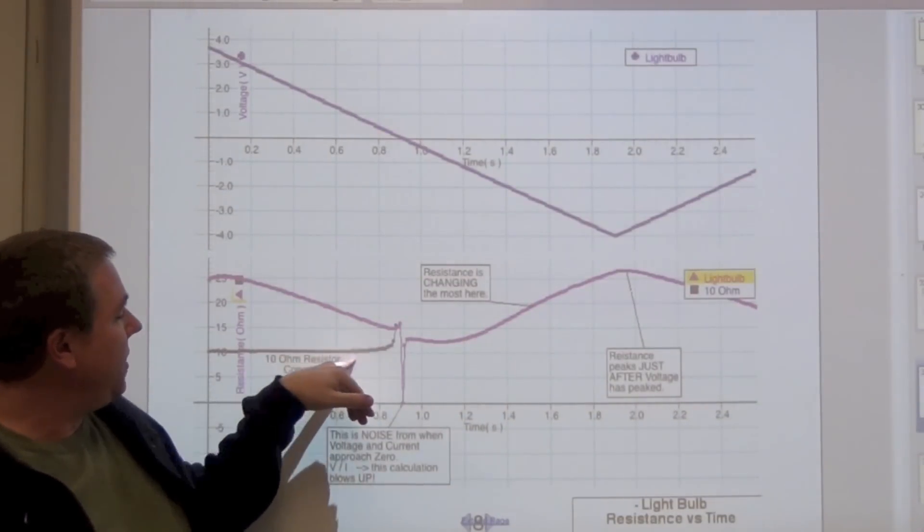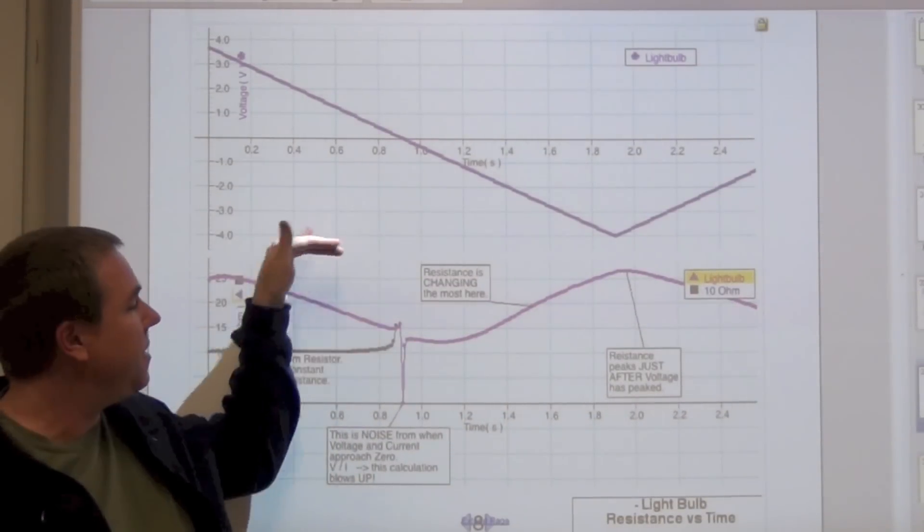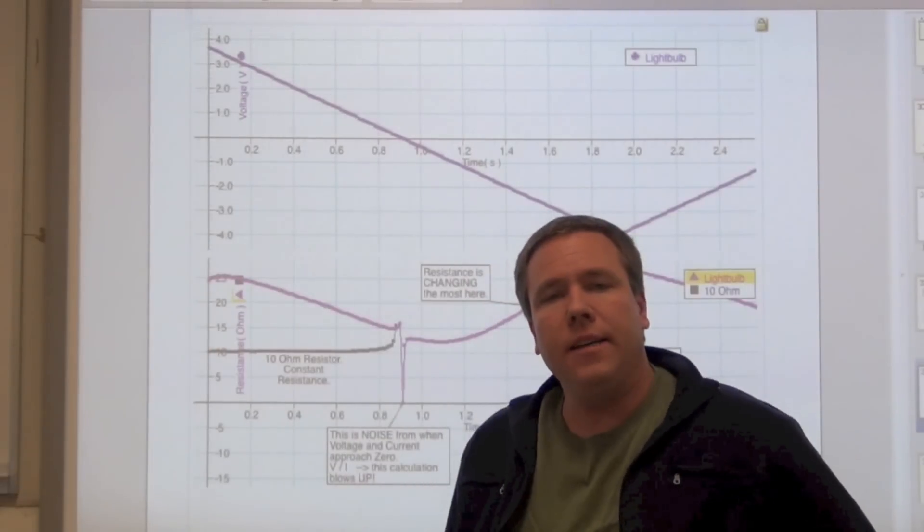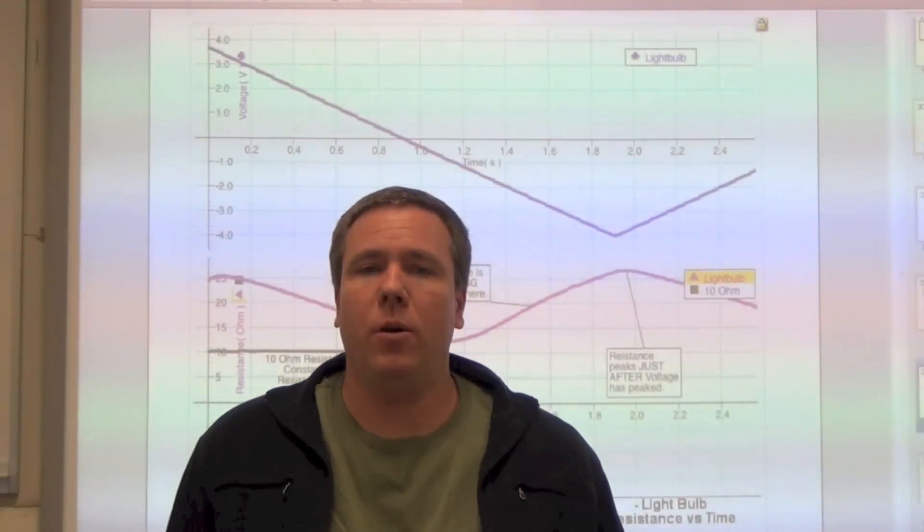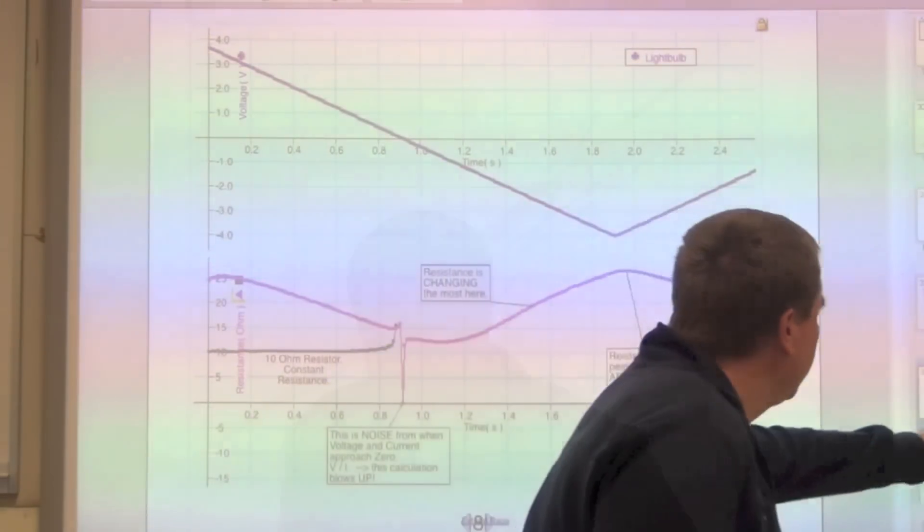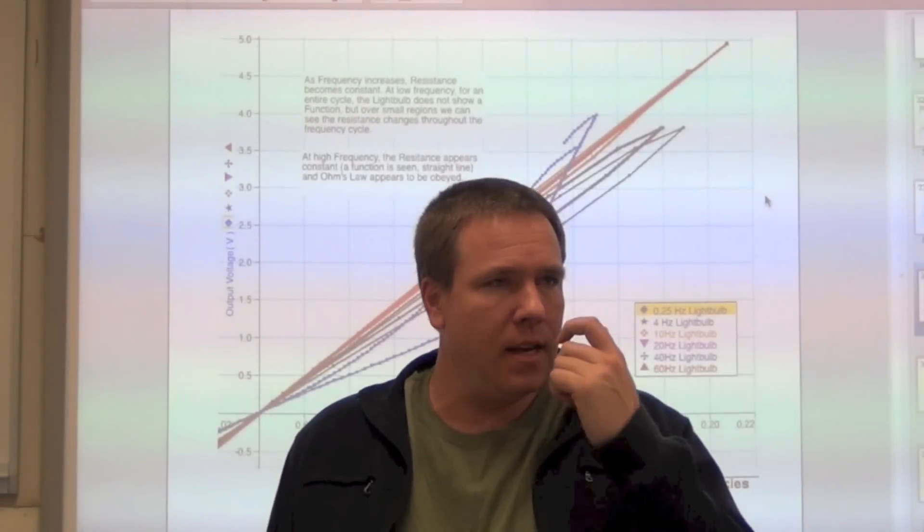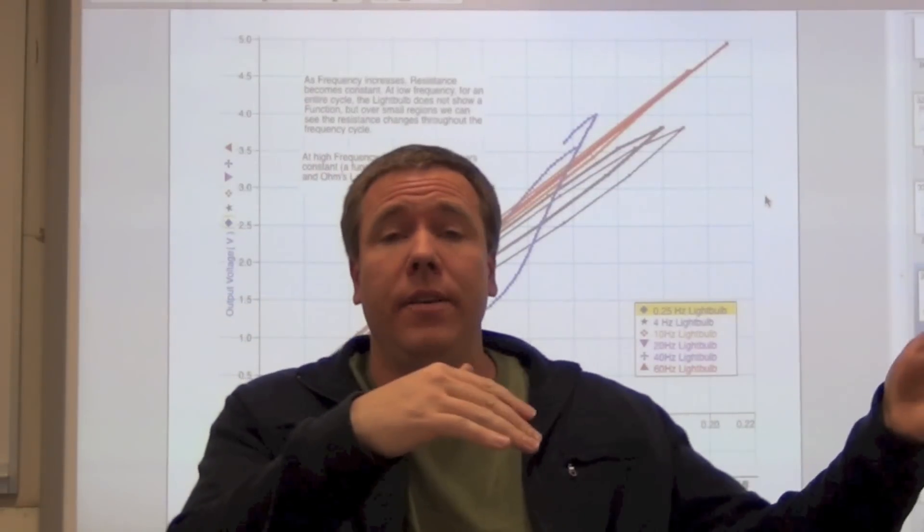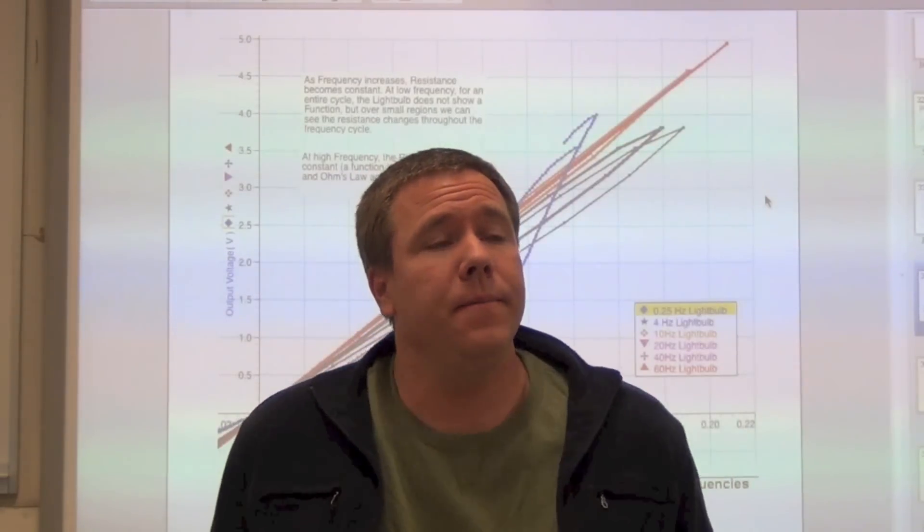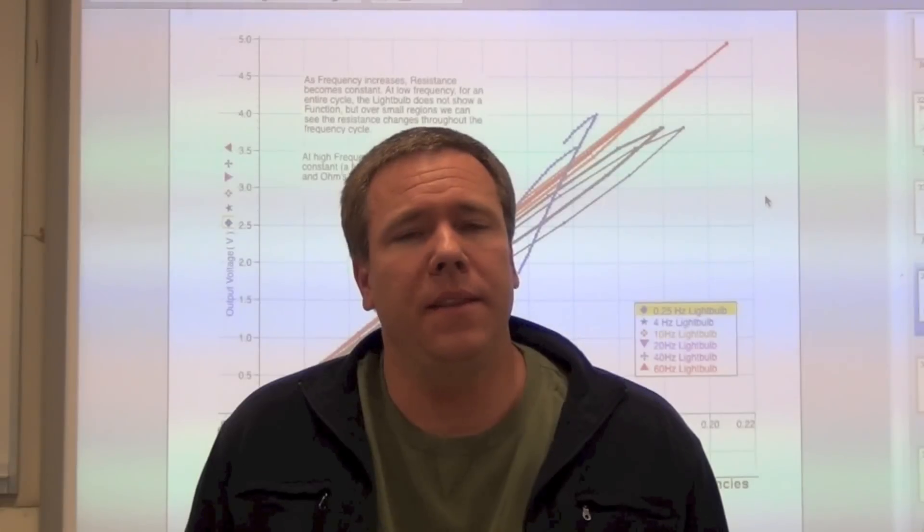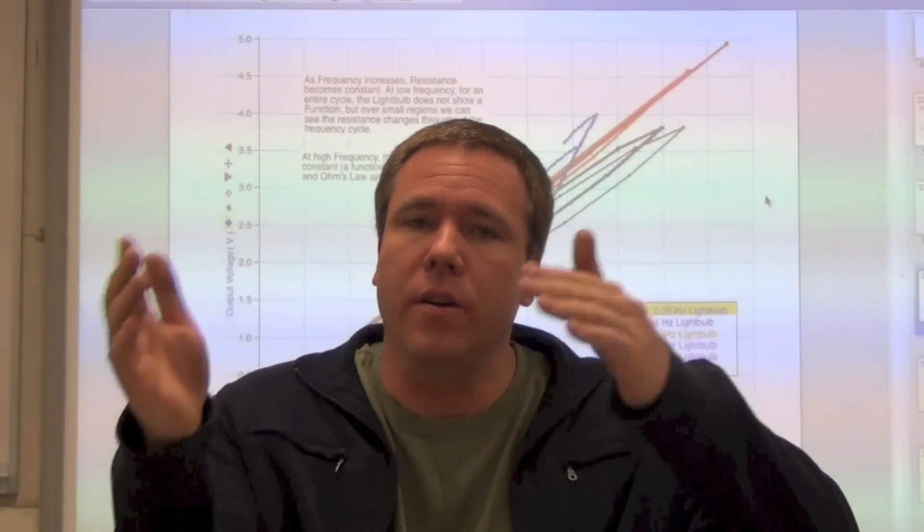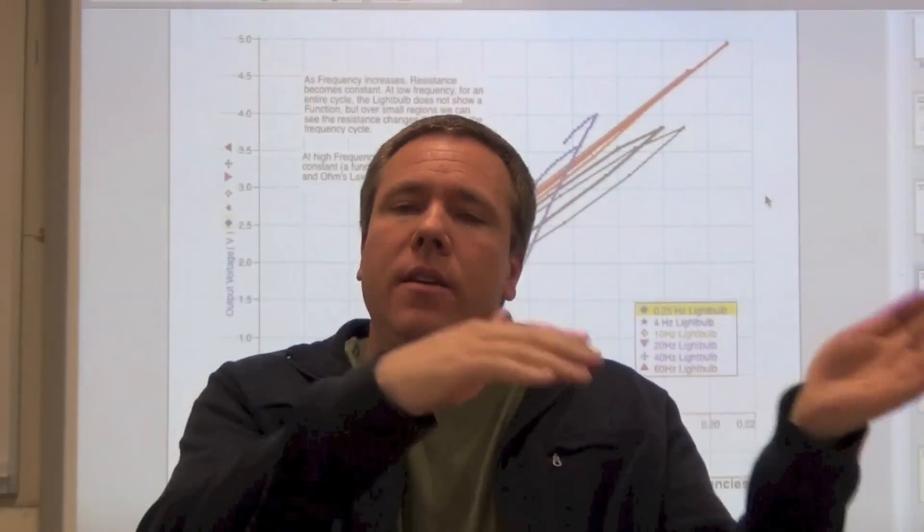And then it's a good idea to throw on the 10-ohm resistor to compare the straight line to this curved line. And then finally, we have the light bulb at different frequencies. Now we've talked about how the light bulb, when we have this really low frequency, there's time for the temperature in the light bulb to change, for that filament to get excited and hotter. Therefore, resistivity changes. Therefore, resistance changes. But then we cool it down or we allow it to cool. And then we heat it up again as we're oscillating back and forth with the current very slowly.